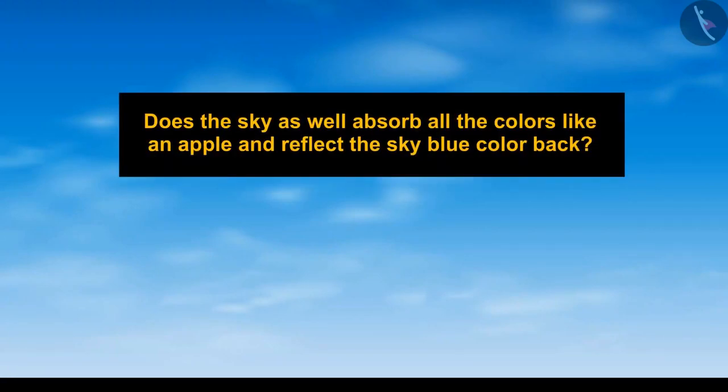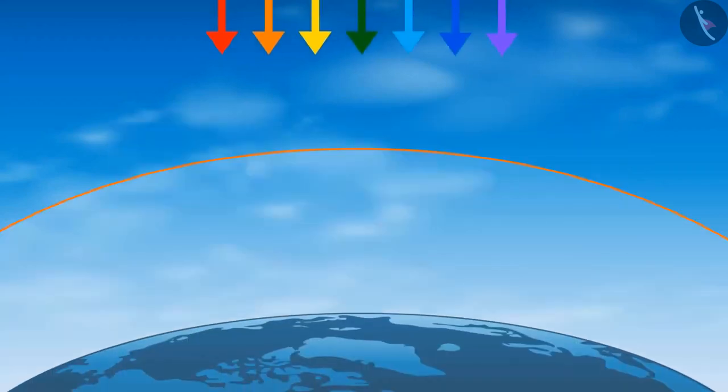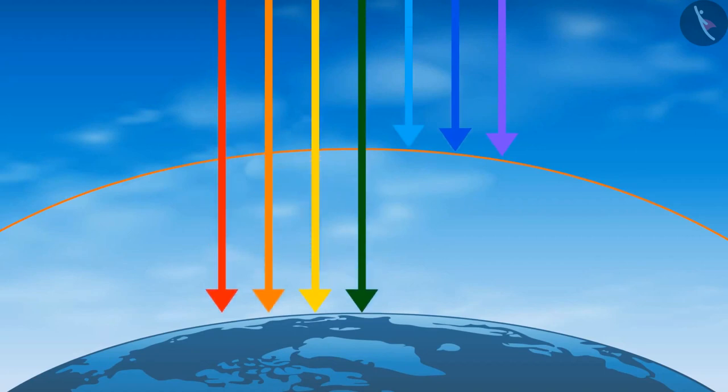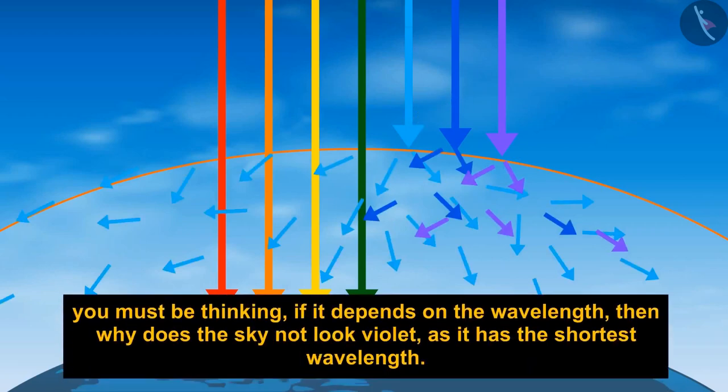Does the sky as well absorb all the colors like an apple and reflect the sky blue color back? The answer is no. When these seven colors enter atmosphere, then they pass through the molecules of air and diminish particles present in the atmosphere, which are too small as the wavelength of the light. These particles scatter the blue light and make the sky appear blue in color. Now you must be thinking, if it depends on the wavelength, then why doesn't the sky look violet as it has the shortest wavelength?